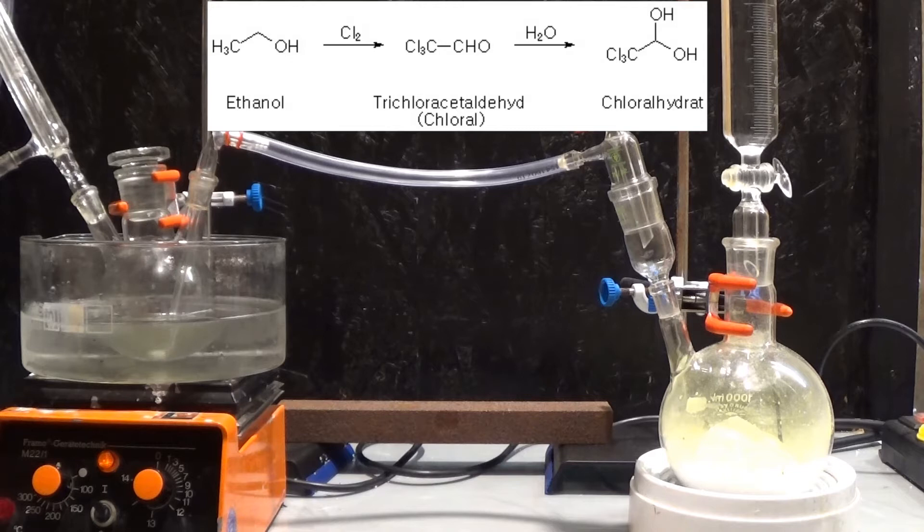This then runs through the tube into the ethanol where it attacks the methyl groups hydrogens and replaces them one by one with a chlorine atom, yielding at first the mono, then the di, and then the trichlorinated ethanol.